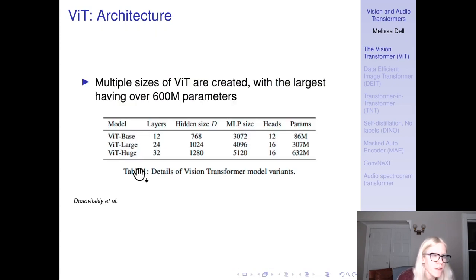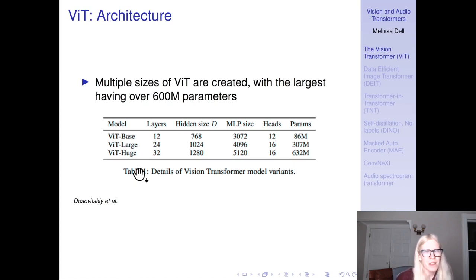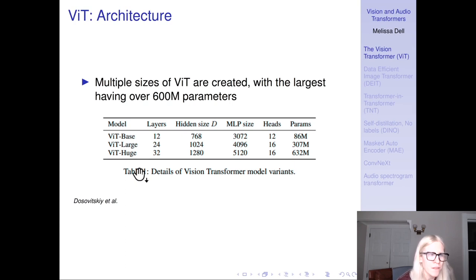Multiple sizes of ViT are created, with the largest having over 600 million parameters: ViT-Base, ViT-Large, and ViT-Huge. In practice, if you're going to fine-tune a ViT, you'd probably want to use ViT-Base — that already takes up a fair amount of memory, requiring maybe a 40GB GPU card. It's already a lot to work with relative to a convolutional neural network like ResNet-50, and fine-tuning ViT-Huge would take a lot of GPU memory.